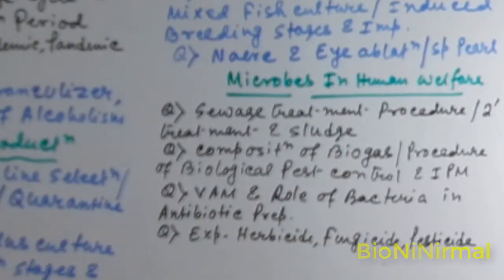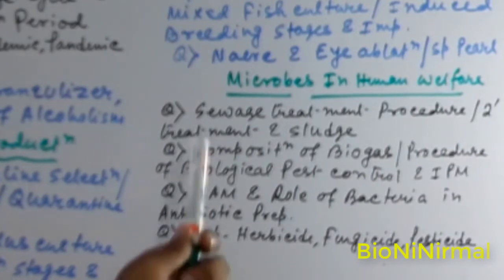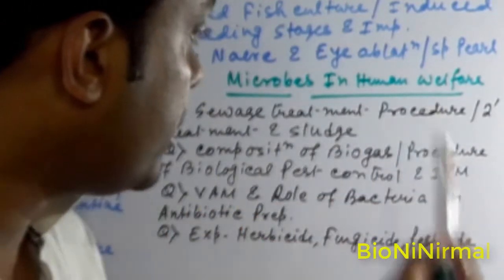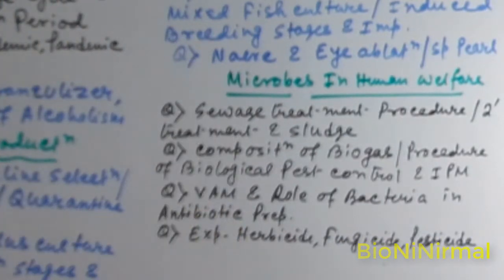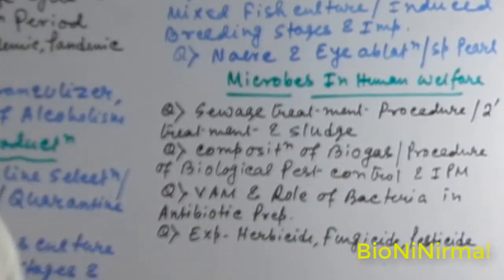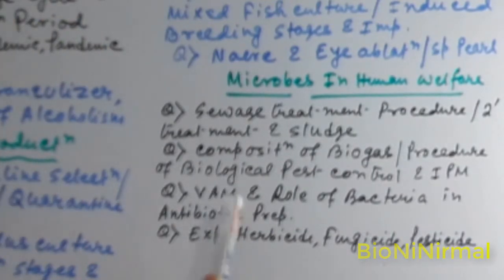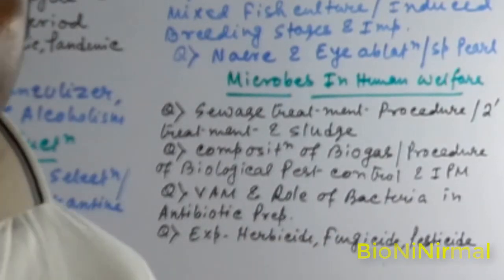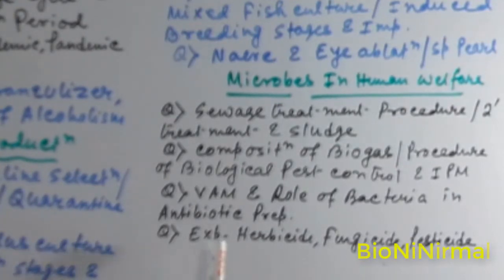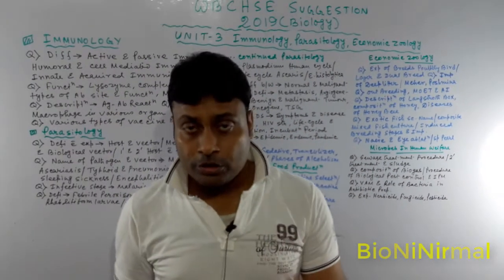Microbes in Human Welfare: bacteria and their roles. Sewage treatment procedure — primary and secondary sewage treatment, sludge. Composition of biogas. Biological pest control and IPM — Integrated Pest Management. VAM, role of bacteria in antibiotic preparation, and how bacteria are utilized. Herbicide, fungicide, and pesticide.